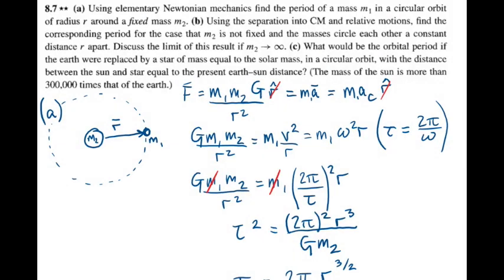Part C asks, what would be the orbital period if the earth were replaced by a star of mass equal to the solar mass in a circular orbit with the distance between the sun and star equal to the present earth sun distance? Noting that the mass of the sun is more than 300,000 times that of the earth. Currently the earth sun system approximates part A because the earth is so much smaller than the sun.